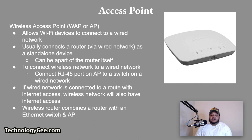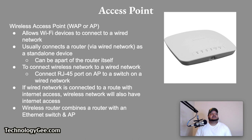A wireless access point, also known as a WAP, is a network hardware device that allows other Wi-Fi devices to connect to a wired network. The access point usually connects to a router via a wired network, but it can also be an integral component of the router itself. To connect a wireless network to a wired network, connect the RJ45 port on the AP to a switch. If the wired network is connected to a router with Internet access, the wireless network will also have Internet access. A wireless router combines a router with an Ethernet switch and an access point. In corporate environments, you'll often see these devices hanging from the ceiling to provide Wi-Fi access.